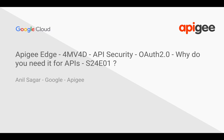Hey everyone, welcome to Apigee Edge 4-minute videos for developers Season 24. In this series, we are going to discuss about API security using OAuth 2.0. In the first episode, we are going to discuss about why you need OAuth 2.0 when you are securing your APIs and exposing it to the outside world.